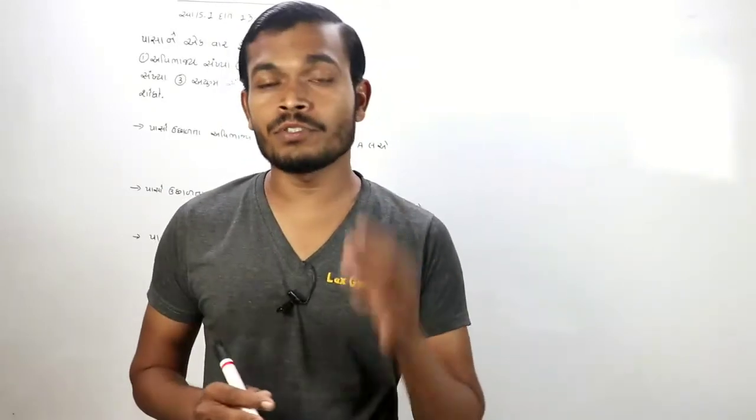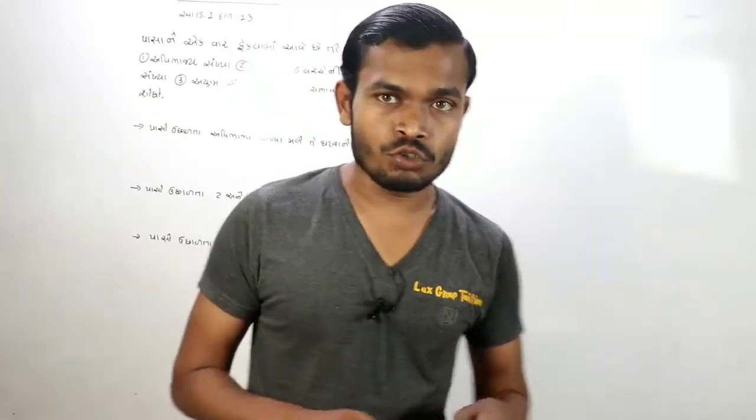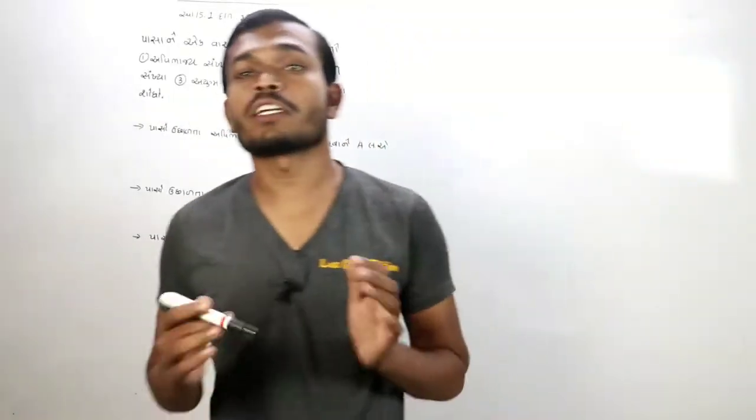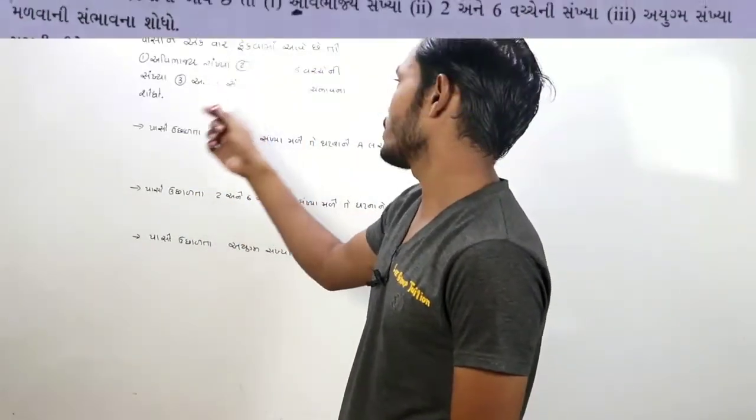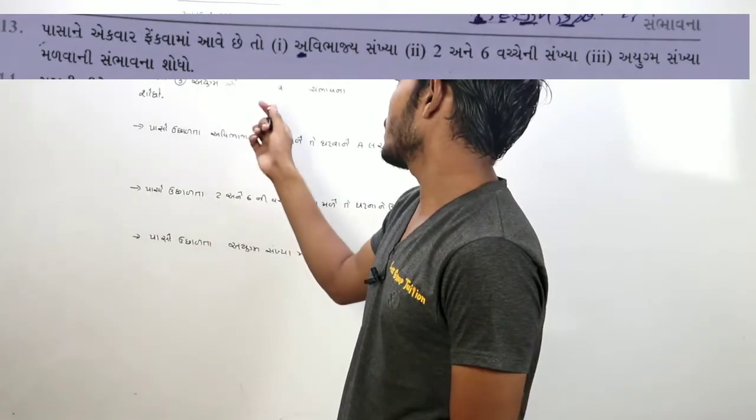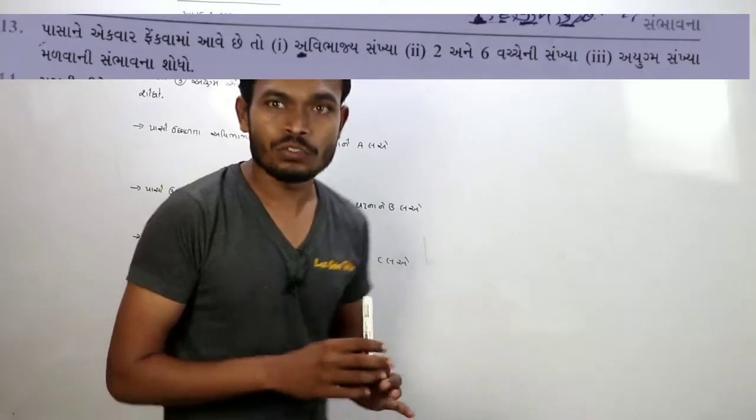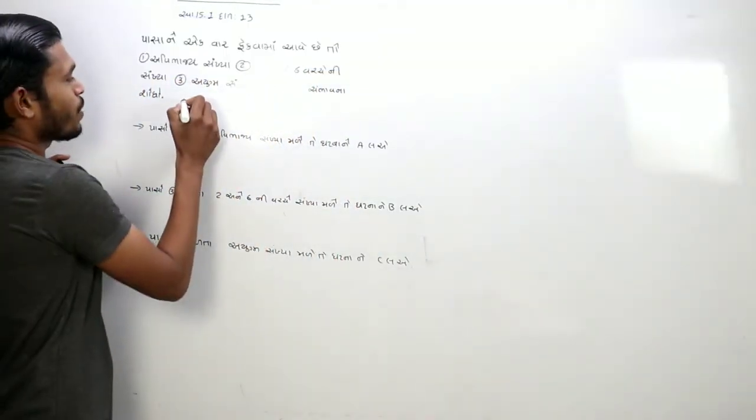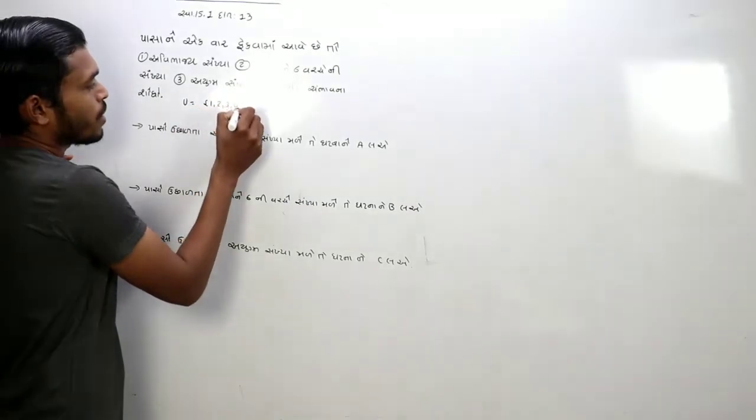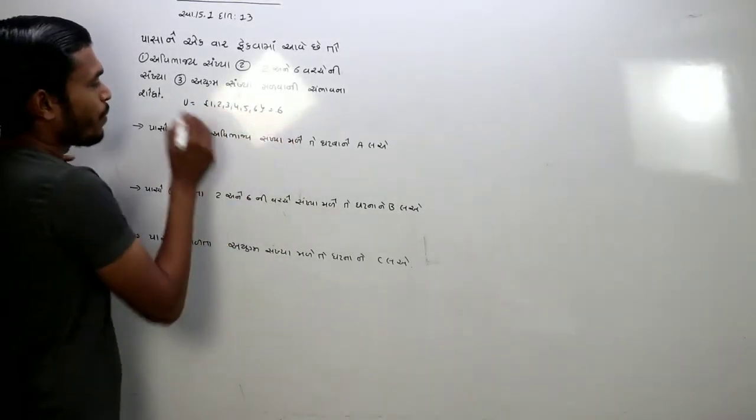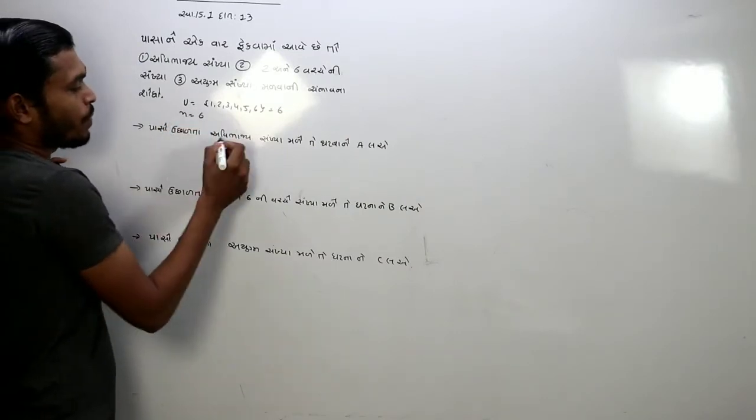આ ગણિતના વીડિયો નંબર 24 છે. વીડિયો નંબર 23 જોયો છે? તો એકવાર જોઈ લેજો. વીડિયો નંબર 24 માં આપણે છ થાય તેની અભાજ્ય સંખ્યા મળે તે ઘટના બરાબર શરૂ કરીએ (This is mathematics video number 24. Have you seen video 23? Then watch it once. In video 24, we discuss when six gives us prime numbers).